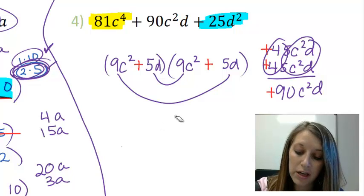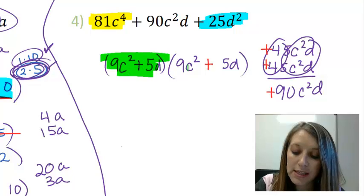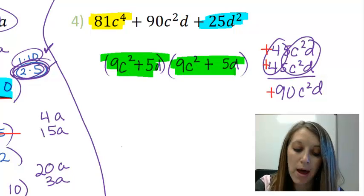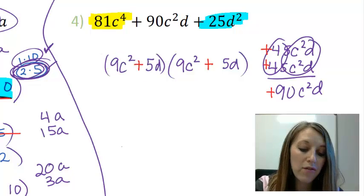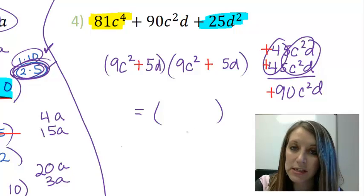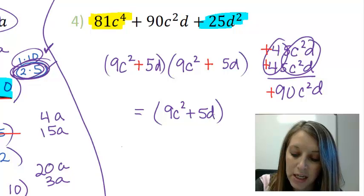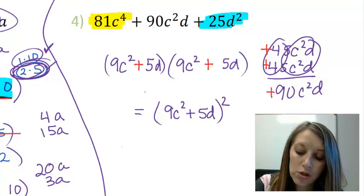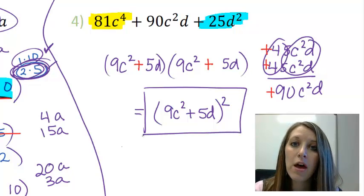So I have factored this by doing my trinomial process, but I can actually factor it farther. If I look at my two sets of parentheses overall, my binomials, notice that they are exactly the same. And whenever they are exactly the same, you can actually condense them farther. To give you 9C² + 5D quantity squared. So those two identical factors squared. So if you ever can condense them, make sure you do that final step. Because if you don't, then the homework will count that answer incorrect.